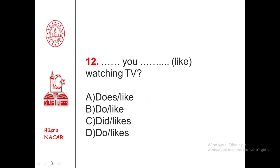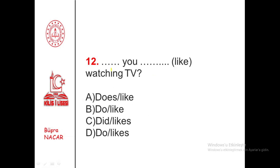We have a question structure. Do you like watching TV? We'll use an auxiliary verb to form the question. The subject 'you' takes 'do' or 'did.' But this is a general statement — do you like watching TV? — so we can't use past tense. Therefore 'do' is the auxiliary. Also, the -s suffix never appears in question forms. The answer is B.